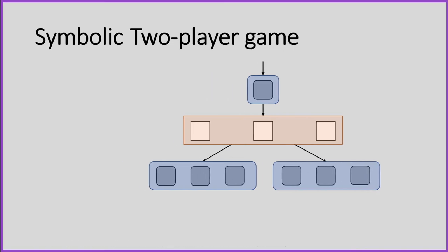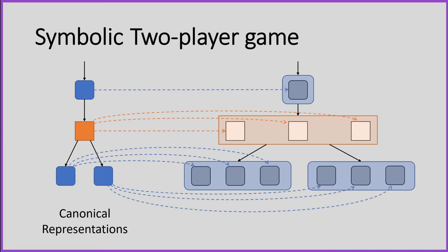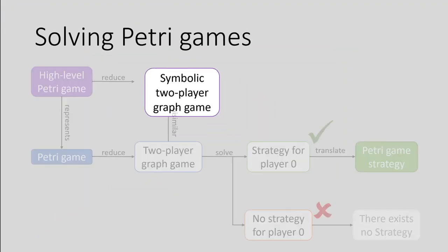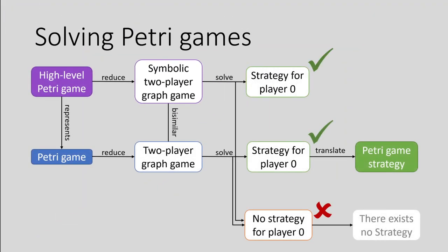We were now able to define canonical representations for each equivalence class. This makes the construction of the two-player game faster in most cases. Also, exploiting these canonical representations, we were now able to directly generate a Petri game strategy from a strategy for player zero in the symbolic two-player game.